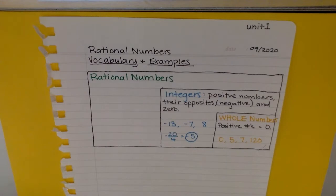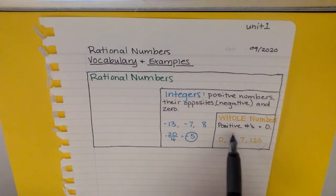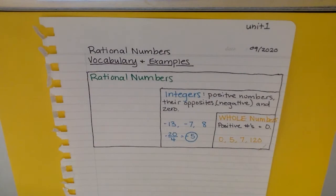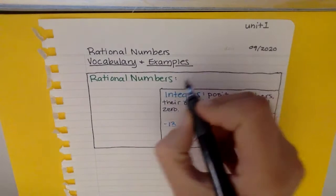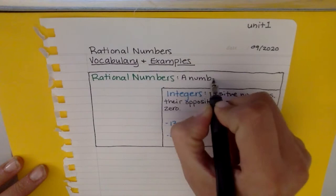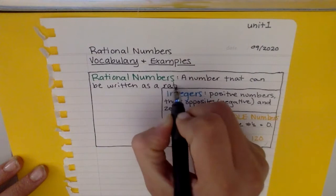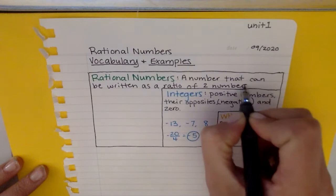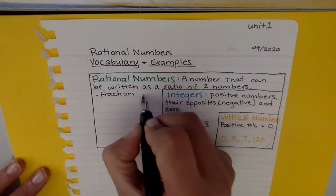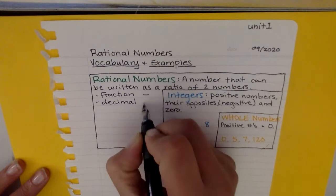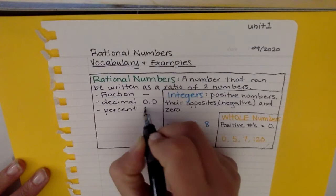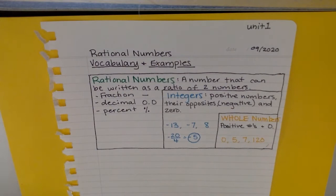Our last group that we're going to focus on for this unit is a rational number, and this includes positive numbers, their opposites and zero, and also includes anything that can be written as a ratio of two numbers. So that would include a fraction, a decimal, or a percent.